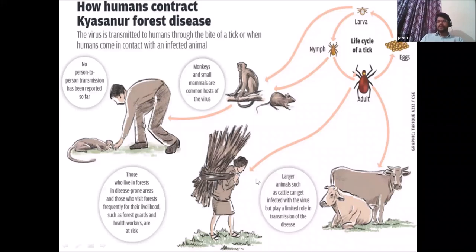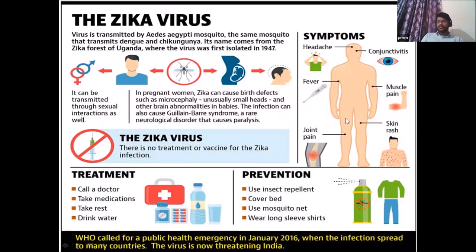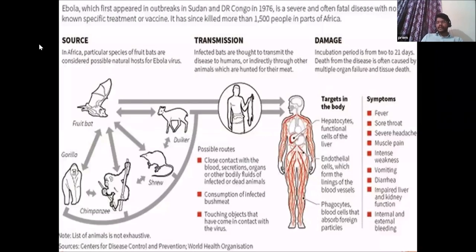Zika virus has a unique feature: it can be transmitted sexually. When it infects a pregnant woman, children are born with a very small head but large brain, causing neurological disorders. There is currently no treatment or vaccine for Zika. It is transmitted by the Aedes aegypti mosquito, which is the same mosquito responsible for dengue and chikungunya. The mosquito that causes malaria is different — remember its technical name to avoid confusion in exams.